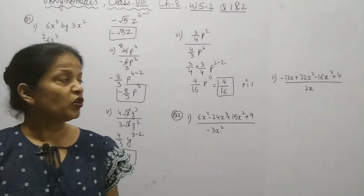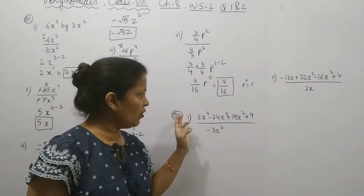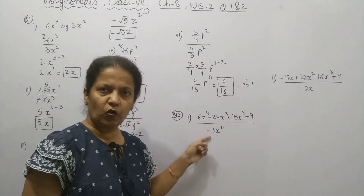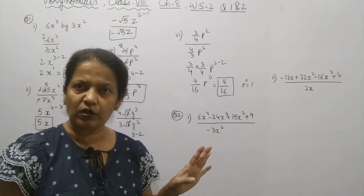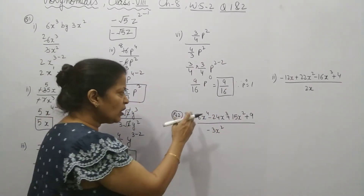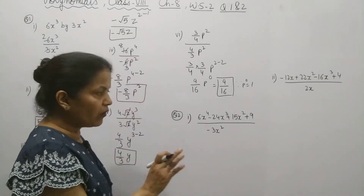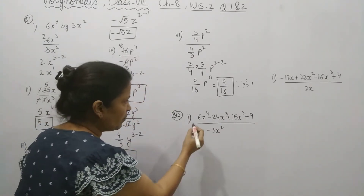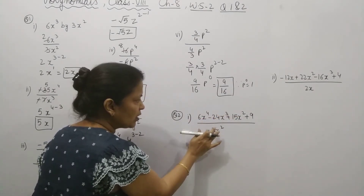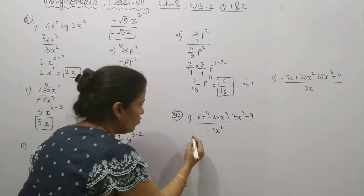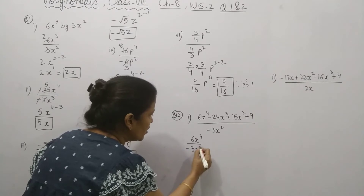Now, in question 2 — you have to divide a polynomial by a monomial. A polynomial can be of any number of terms. So, the first step in such a quotient is to write each term separately: this upon this, this upon this, and so on. We will write them separately first and then follow the procedure.